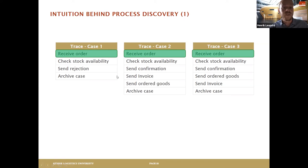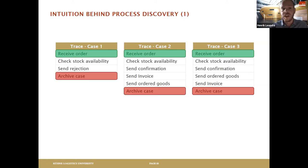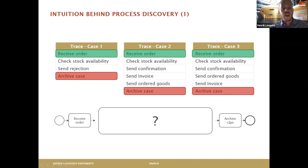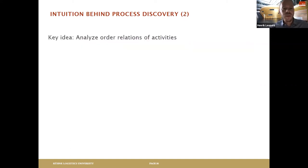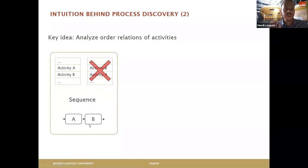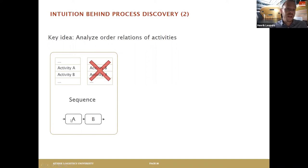An obvious pattern is that all traces start with 'receive order' and end with 'archive case.' These boxes represent the activities of our process — this is the start and this is the end. So we know it always starts with receive order and always ends with archive. The question is what happens in the middle. The idea is to analyze the relations: if activity A is always followed by B but never the other way around, then we can safely assume A must be executed before B.